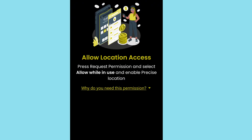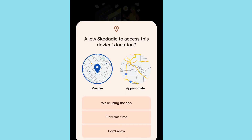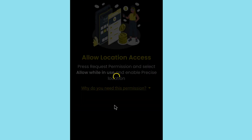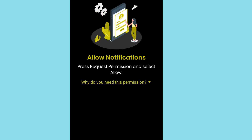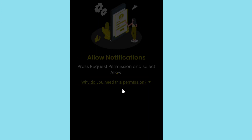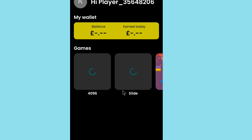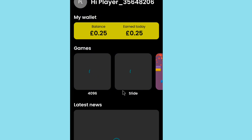After entering the code, the app will ask you to allow location access. Tap 'request permission', then tap 'while using the app', and tap 'allow'. After granting location permission, you will receive 0.25 British pounds as a bonus added to your balance.